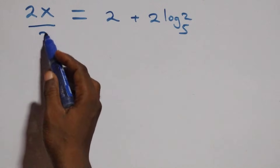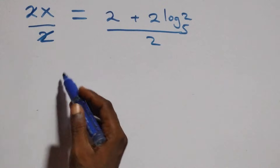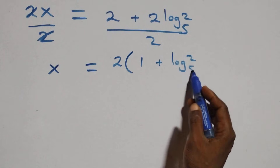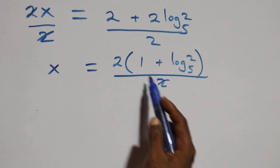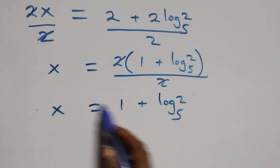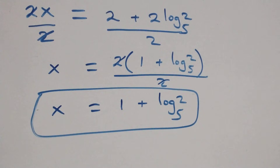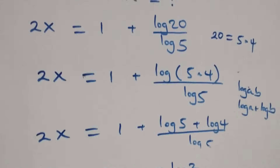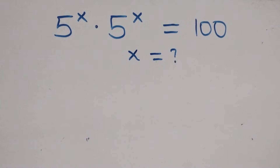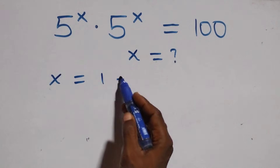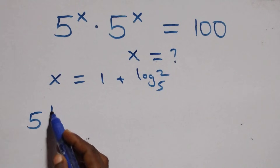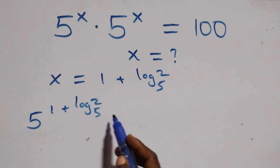Here the 2 cancels on both sides, giving x equals to 1 plus log 2 base 5.